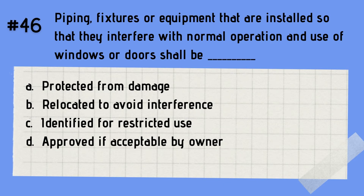Question 46: Piping, fixtures or equipment that are installed so that they interfere with normal operation and use of windows or doors shall be — A. Protected from damage. B. Relocated to avoid interference. C. Identified for restricted use. D. Approved if acceptable by owner. The answer is B — it should be relocated to avoid interference. When piping, fixtures or equipment that are installed interfere with normal operation and the use of windows or doors, it should be relocated to avoid interference.